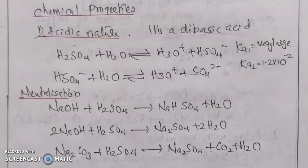Next, we are discussing the chemical properties of sulfuric acid. First: acidic nature. Sulfuric acid is a dibasic acid. Dissociation equation — partial dissociation: H2SO4 is partially dissociated into H3O⁺ and HSO4⁻. The first dissociation constant Ka1 is very large.